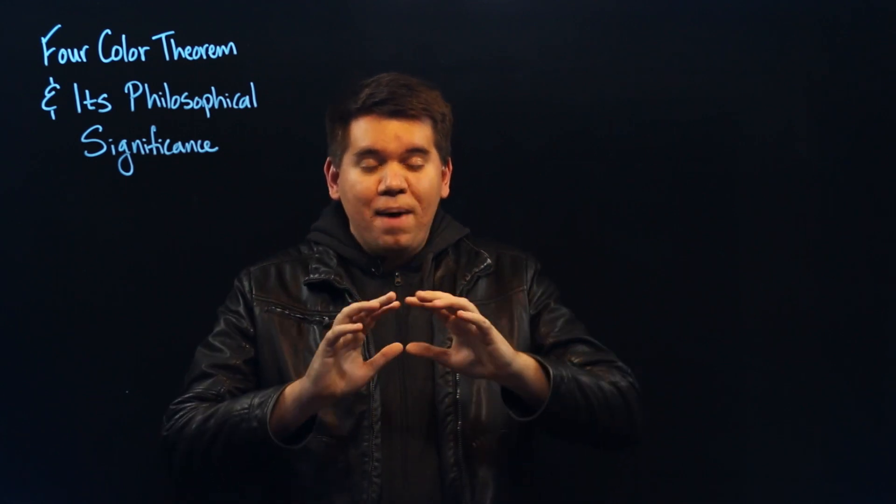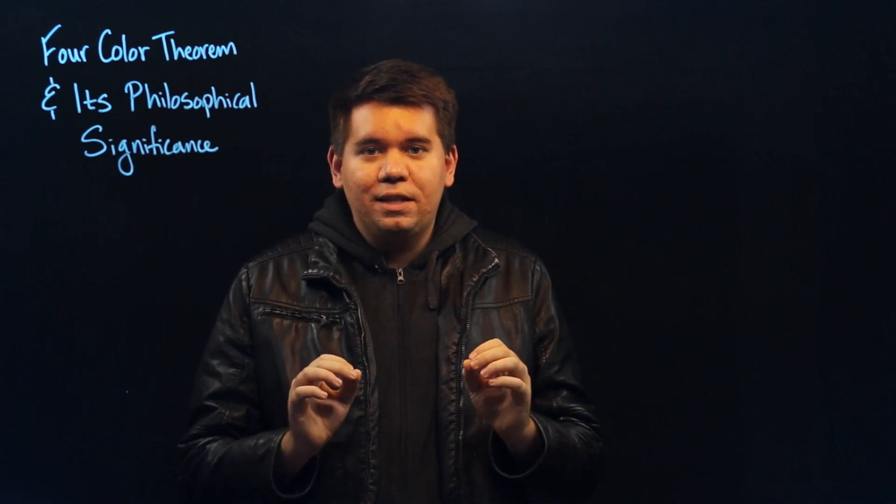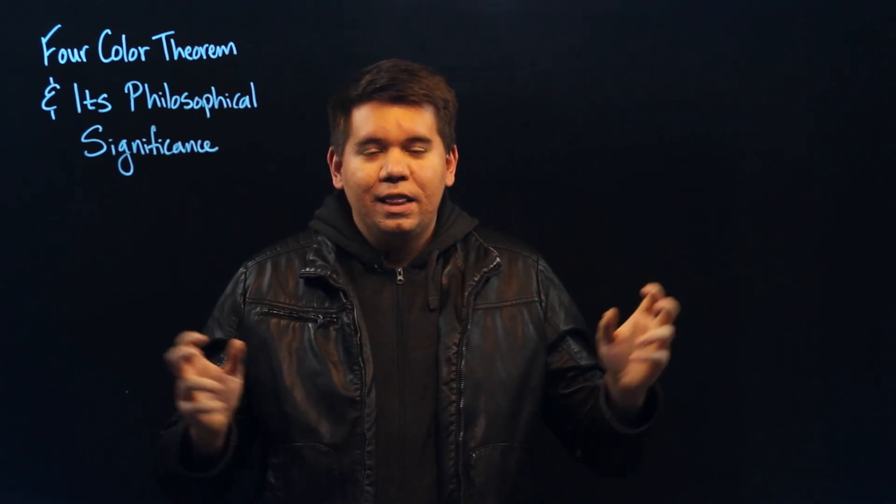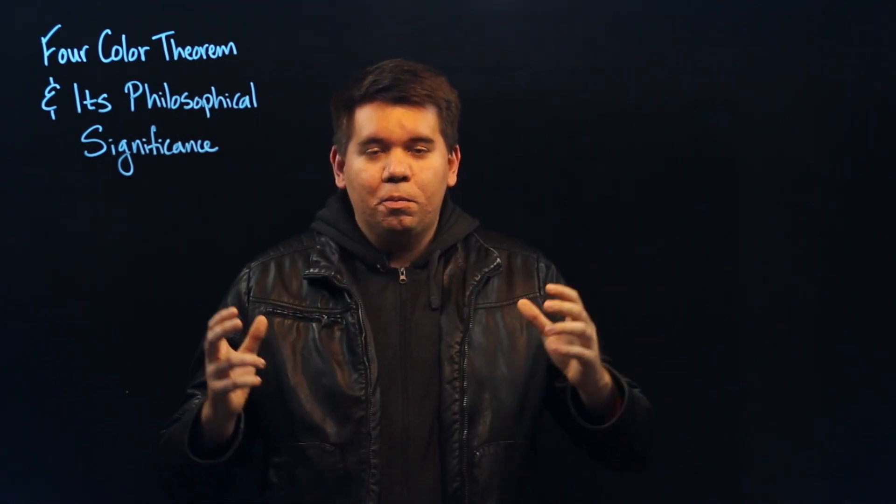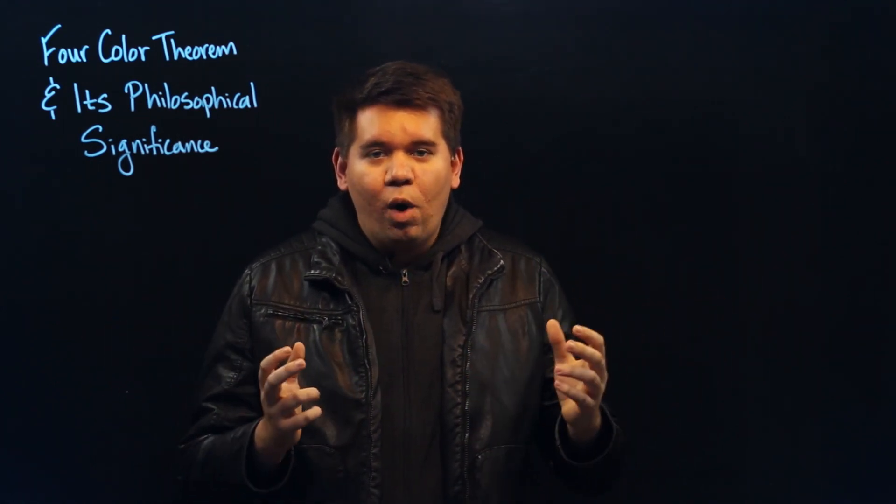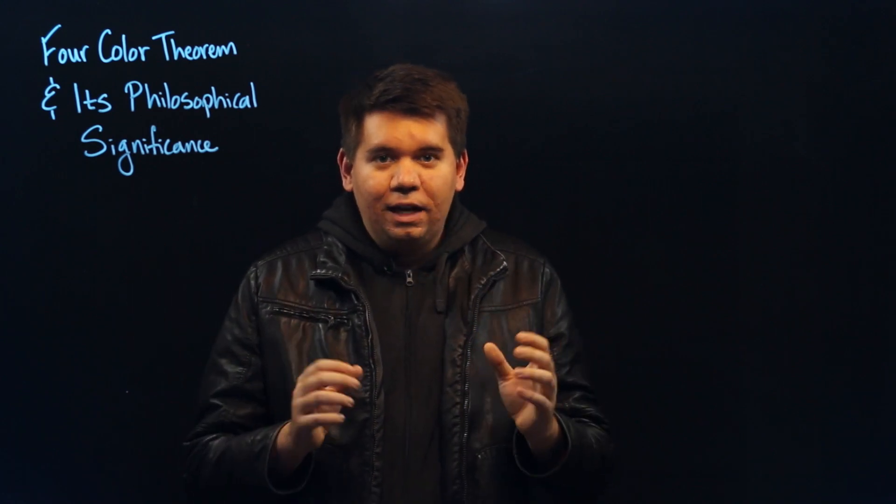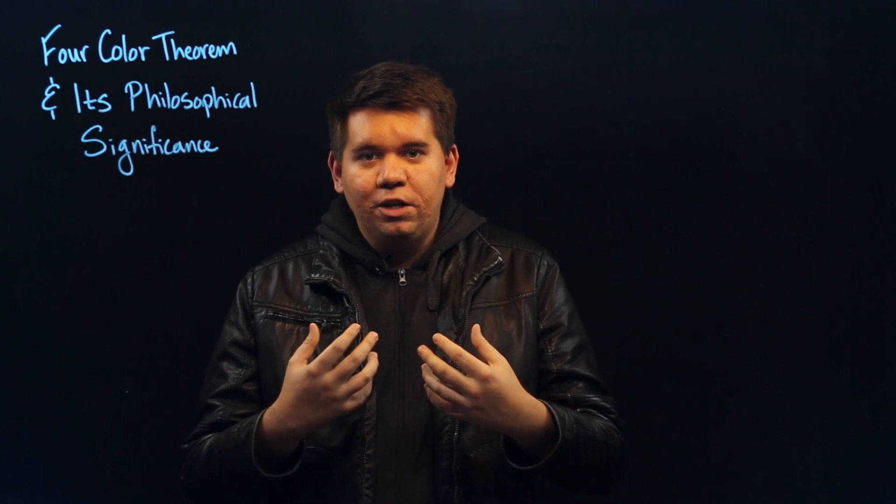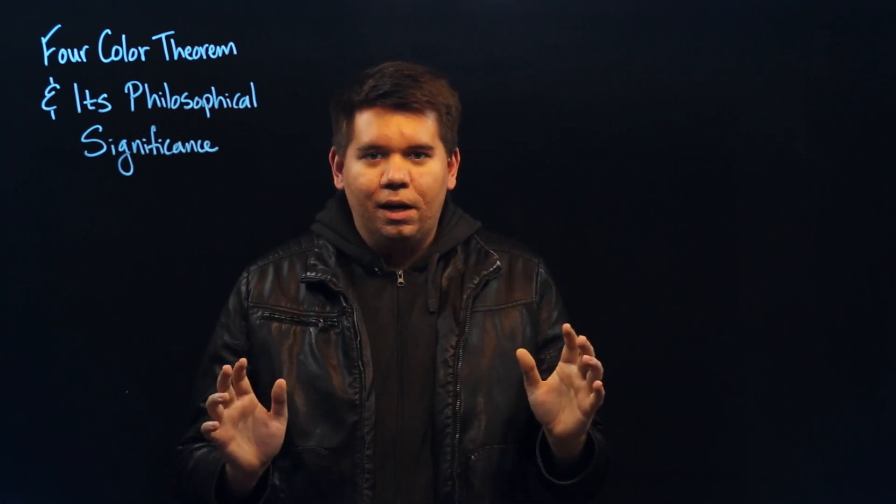For their proof, they had many cases or configurations they had to consider. They called this the unavoidable set. They argued that within any graph, any simple planar graph, there would exist one of these unavoidable configurations. Hence, if they could show that if there was a way to color the graph that had each of these configurations, then they were done.